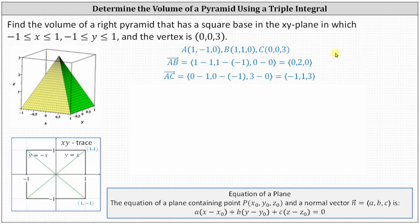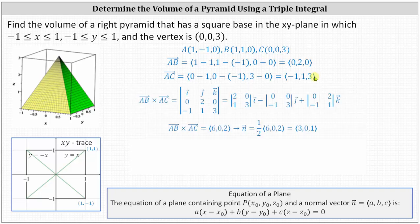Now we'll determine the cross product of these two vectors to find a normal vector to the plane. We set this up as a three-by-three determinant in which the first row contains the unit vectors i, j, and k; the second row contains the components of vector AB; and the third row contains the components of vector AC. Using expansion by minors, vector AB crossed with vector AC is (6, 0, 2), which is a normal vector to the plane.